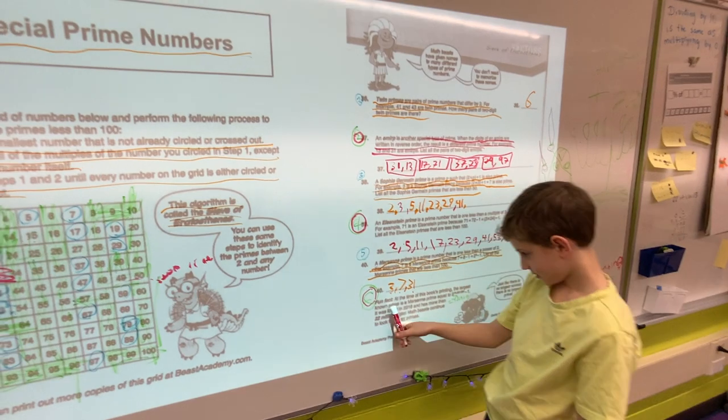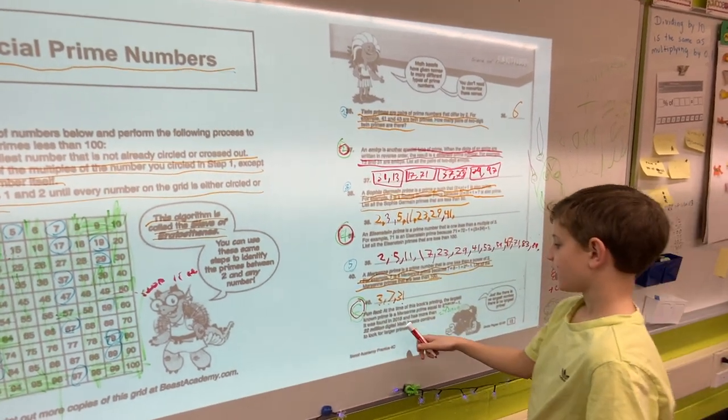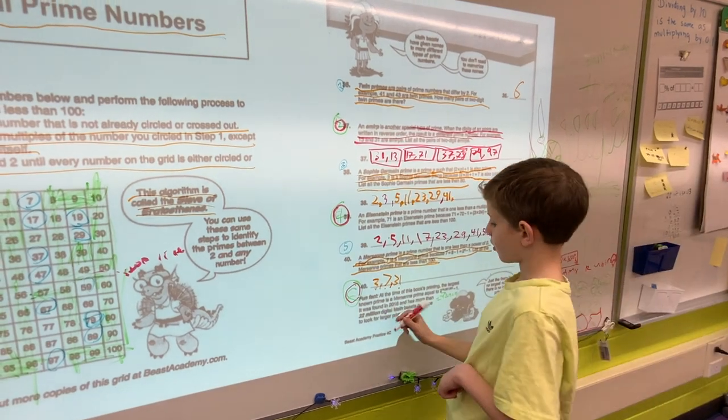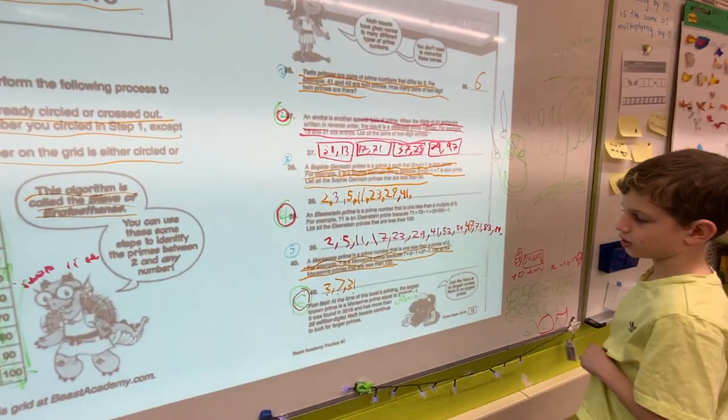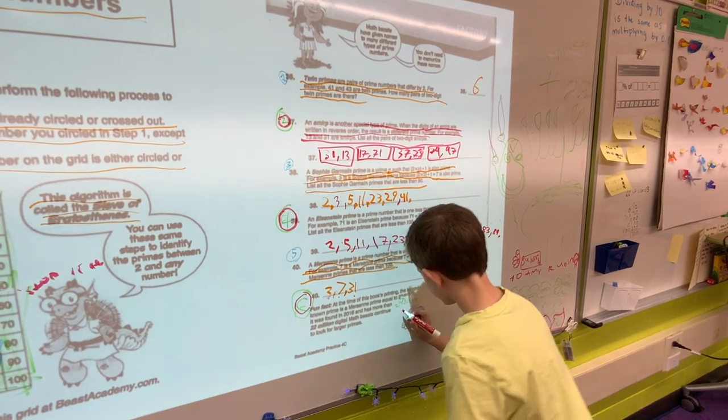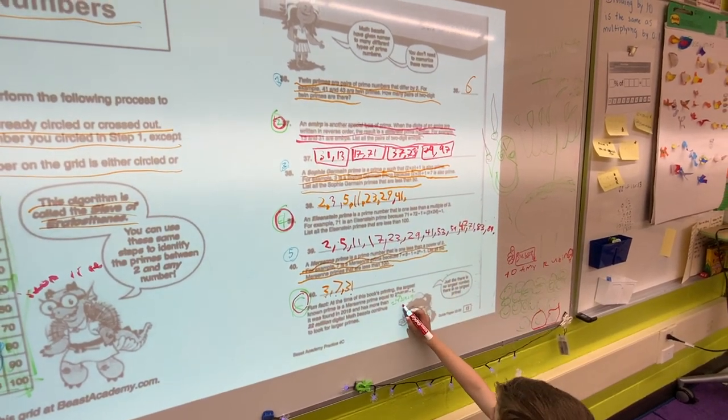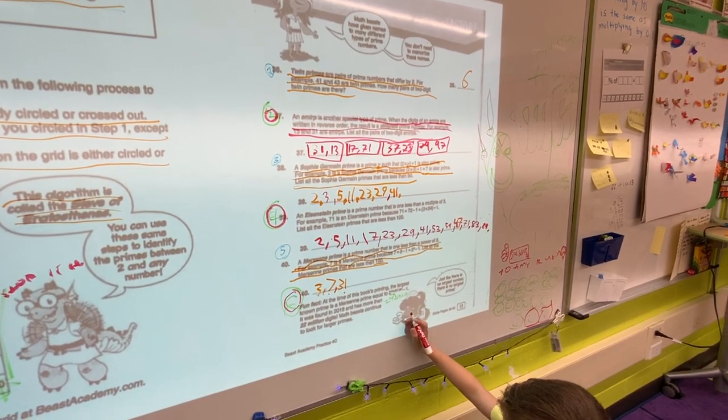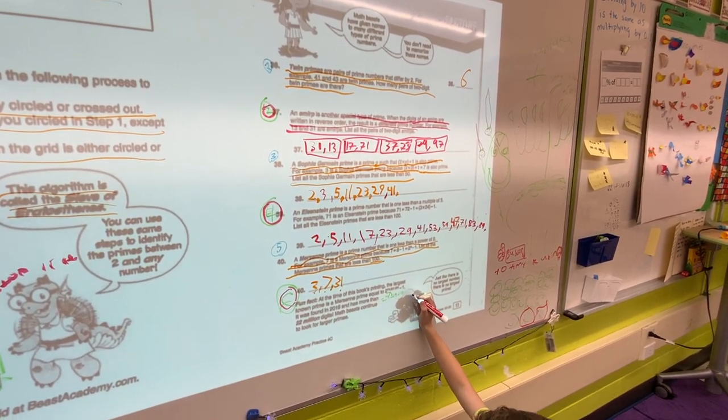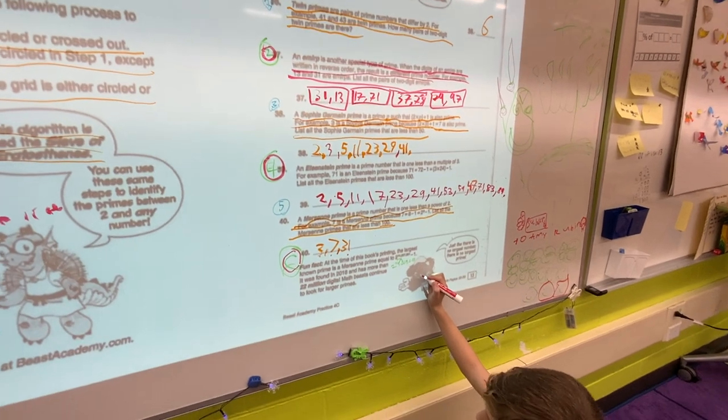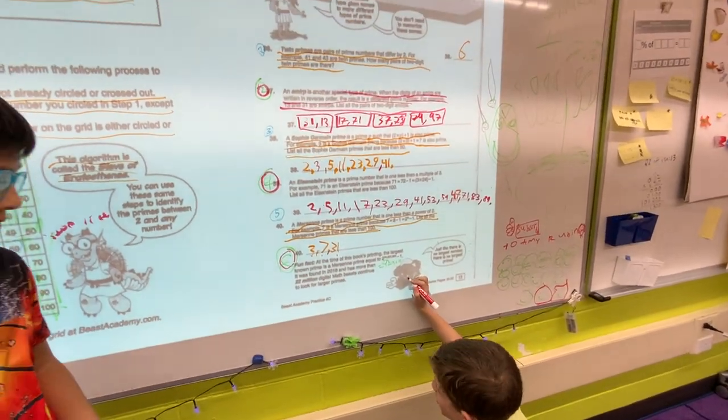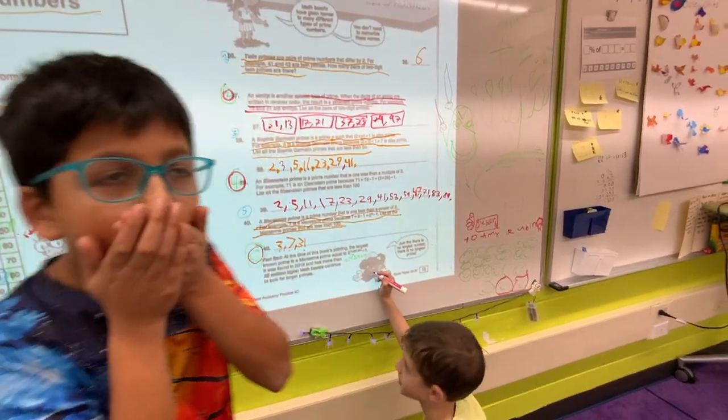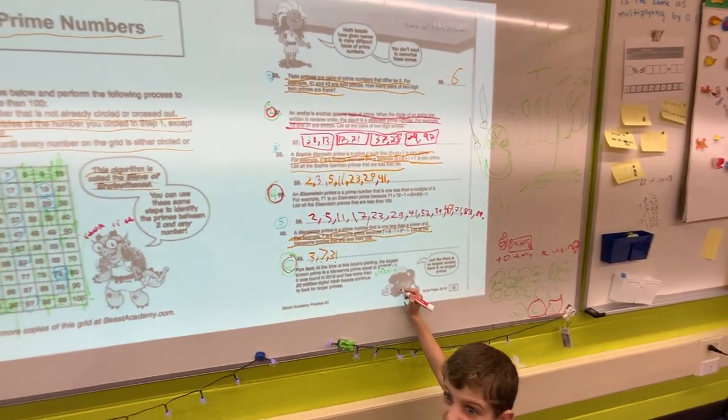And the fun fact: at the time of this book's printing, the largest known prime is a Mersenne prime equal to 2 to the 74,207,281 power minus 1. It was founded in 2016 and has more than 22 million digits. Mathematicians continue to look for larger primes.